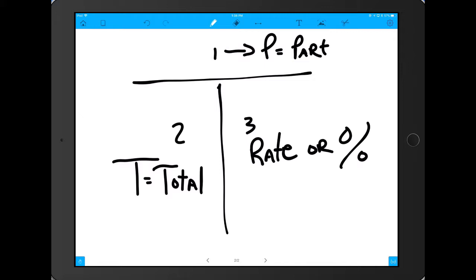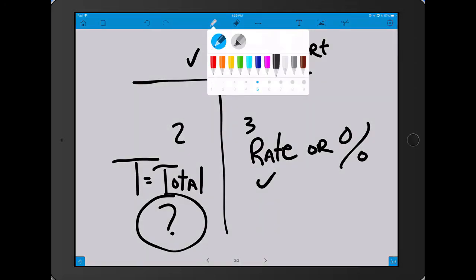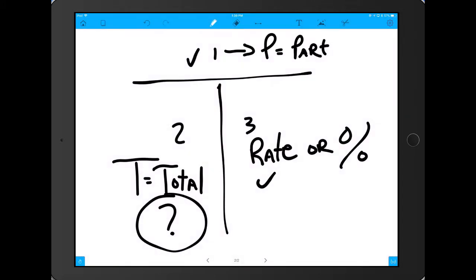So when you read a math problem, they will always give you two of these variables. It's your job to find out what is the variable I'm trying to solve for. So you'll always be given two. You've got to figure out what the third one is. Now, let me just show you something that helps me out, and perhaps it may help you as well.